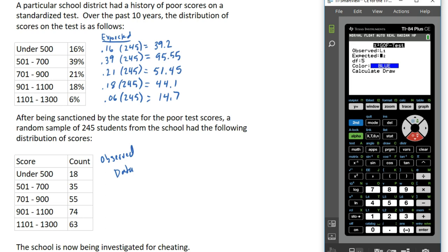We want observed in L1, expected in L2. The degrees of freedom here would be four because we have five categories. So it's the number of categories in your distribution minus one, which is four. And we would calculate.